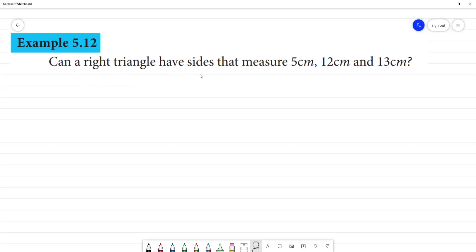Can a right triangle have sides that measure 5 cm, 12 cm and 13 cm? So, if you look at this, 13 cm is the largest side, so that may be the hypotenuse.